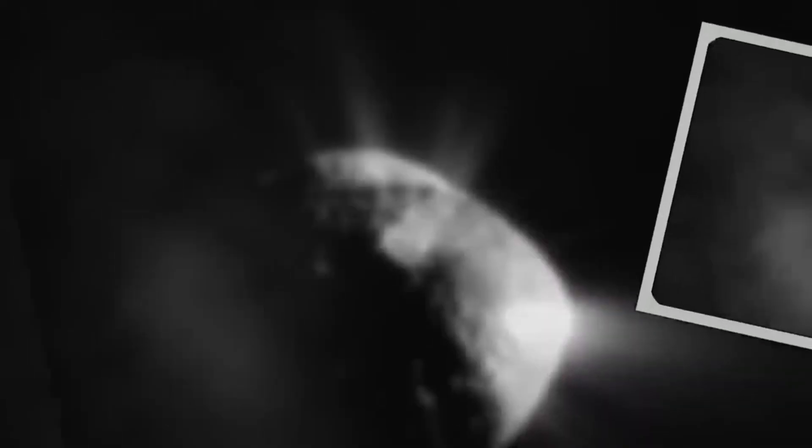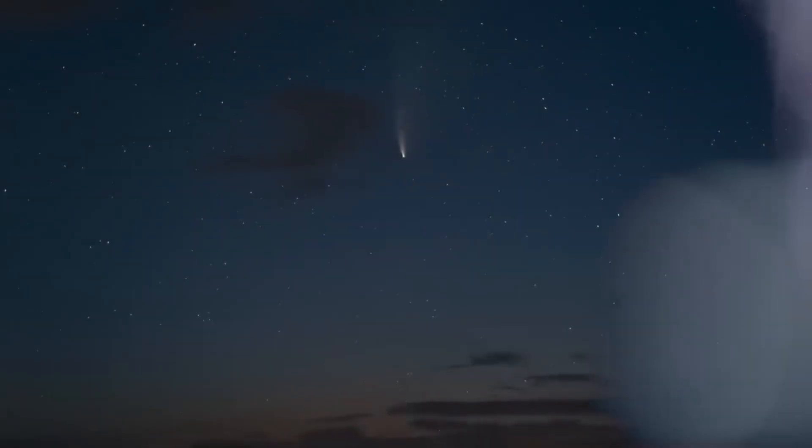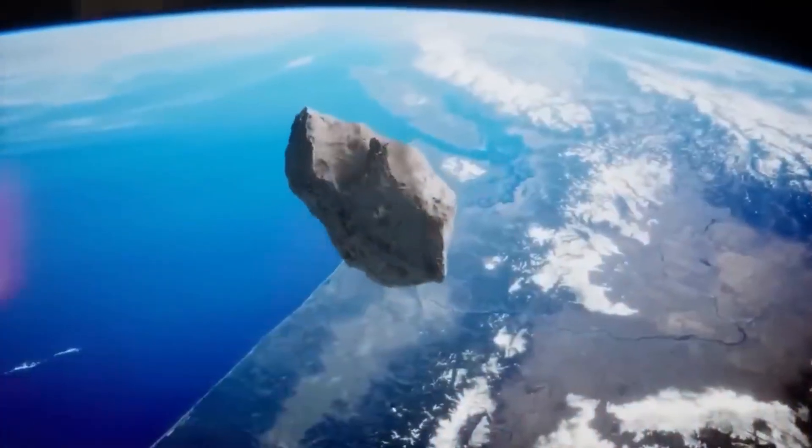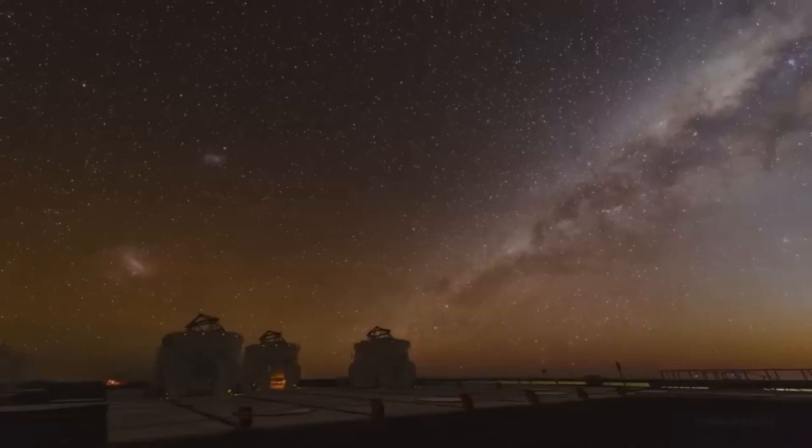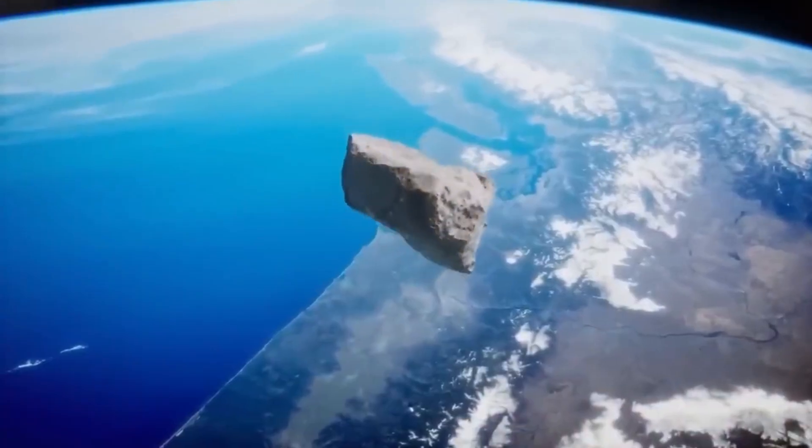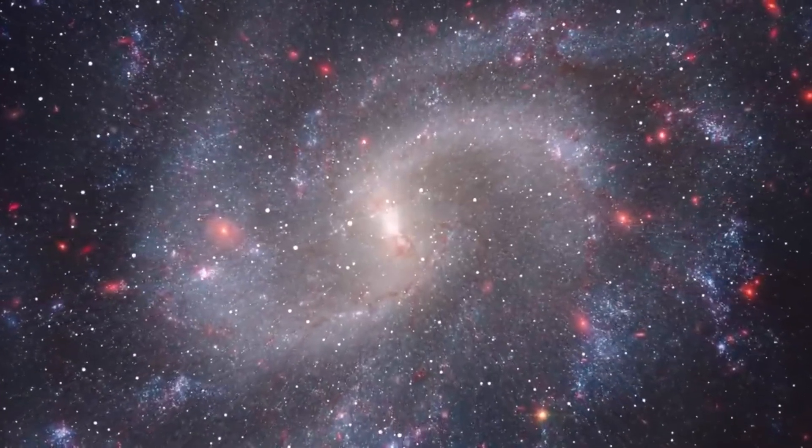But here's what makes 3i/Atlas so special. Unlike the previous interstellar visitors, this one is giving us a real show. It's developing a beautiful tail and glowing coma as it gets closer to our sun, just like comets from our own solar system do. This means we can study it in ways we never could with the previous visitors. And the James Webb Space Telescope is perfectly positioned to capture every detail.